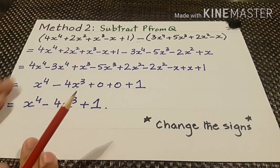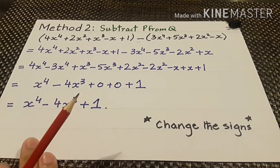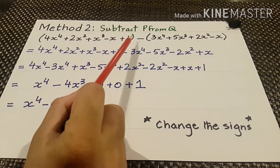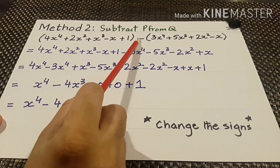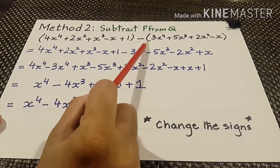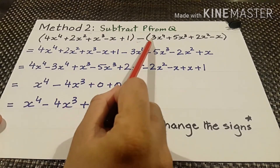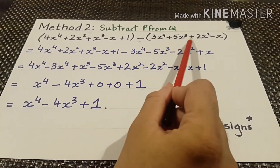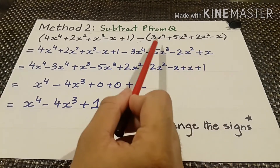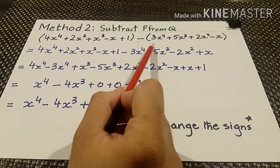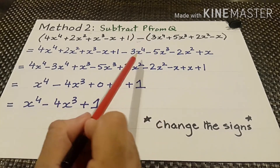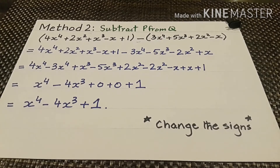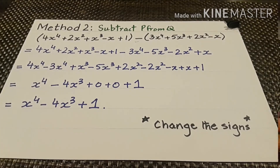We get the value x to the power 4 minus 4x cubed plus 1. In this method, the key point is: when you are subtracting and you open the bracket, the signs of the terms inside the bracket will change — if they are positive they become negative, if they are negative they become positive.